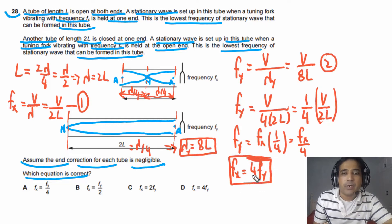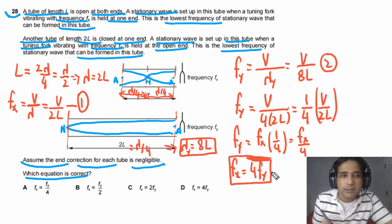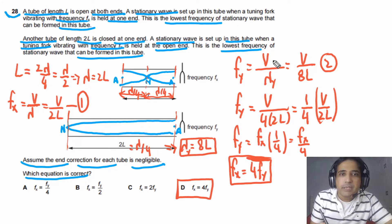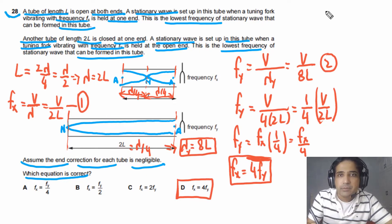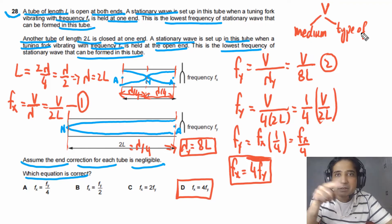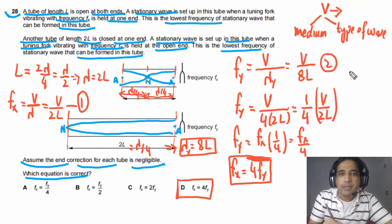The answer for question 28 is D. To approach this type of problem, you need to know how to calculate frequency using F = V/lambda. The speed V is the same in both cases because we have sound waves in the same medium (air). If V were not the same, we could not compare this way.